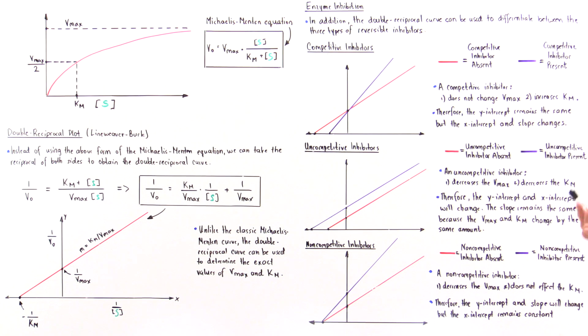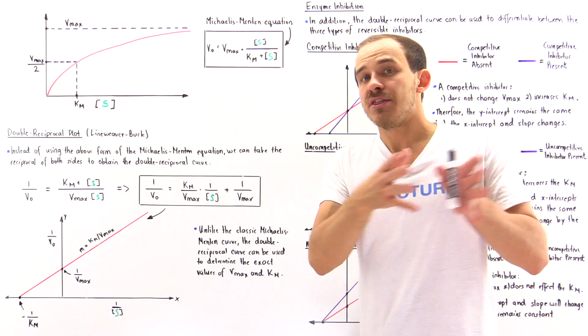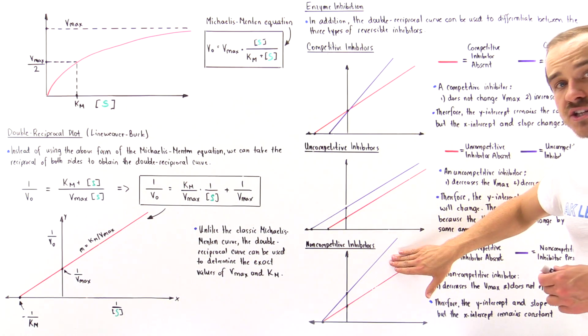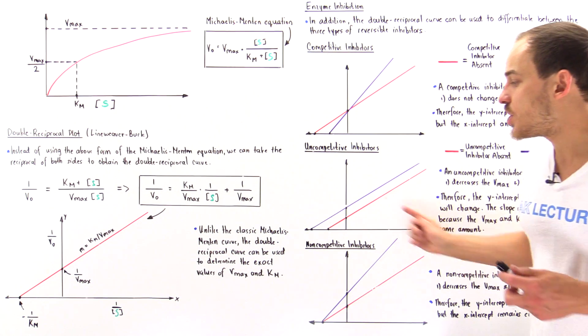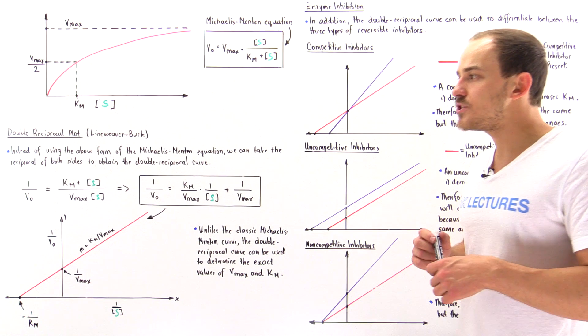So again, if we compare the no inhibitor and the inhibitor, we compare the two curves and we see this result, then that means we have a non-competitive inhibitor present inside our mixture.